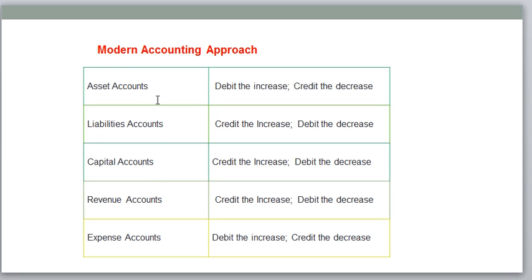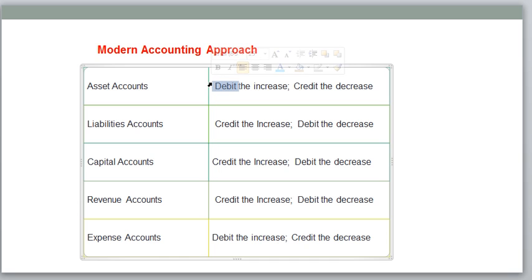Asset accounts include machinery, building, furniture, office equipment, and vehicles — these all come under the asset category. Once an asset is increasing, we need to make it debit. As mentioned, every transaction hits two accounts when any transaction occurs. One we make debit and one we make credit. So if an asset is increasing, then make it debit; if asset is decreasing, then make it credit.